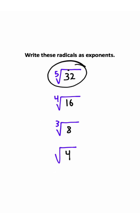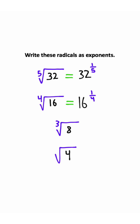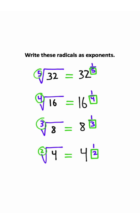The fifth root of 32 up here, you can actually rewrite this as 32 to the one-fifth power. The fourth root of 16 would be 16 to the one-fourth power. The cube root of 8 would be 8 to the one-third power. And likewise, the square root of 4 would be 4 to the one-half power. Hopefully you're recognizing the relationship between these fractions here and the numbers on the radical.